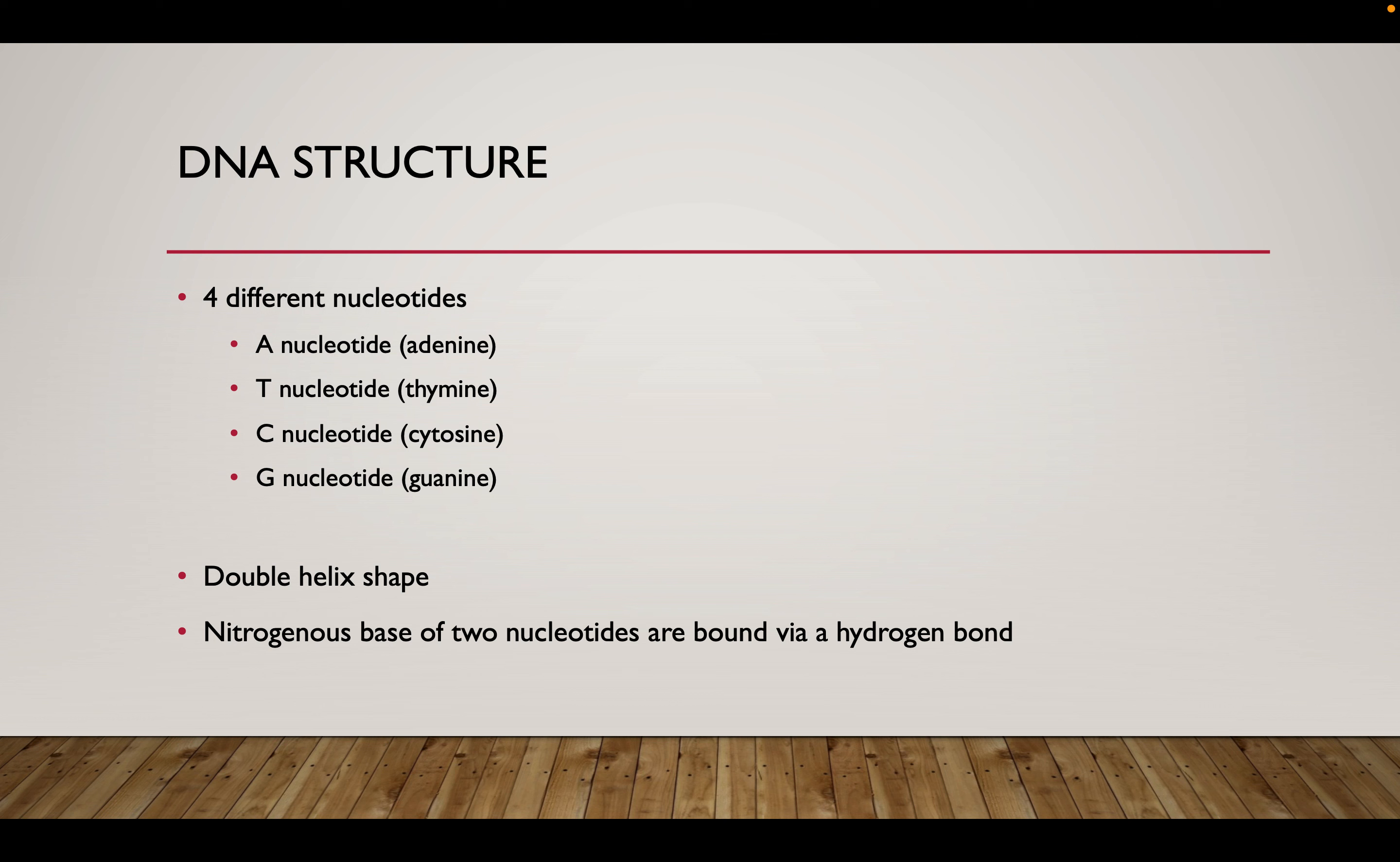For the monosaccharide, you have something called deoxyribose. So it is essentially a ribose sugar that does not have a particular oxygen molecule off of its two prime carbon. And we'll take a look at that, and you'll see exactly where that lies in the DNA molecule.